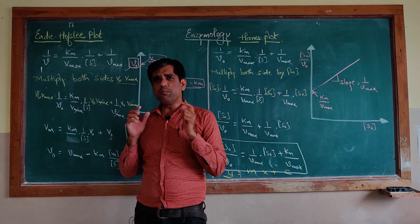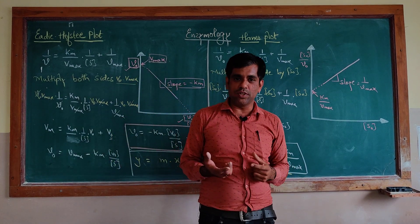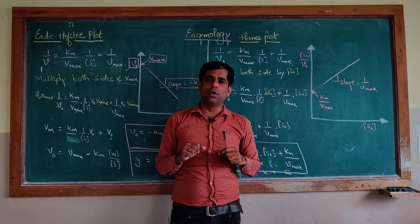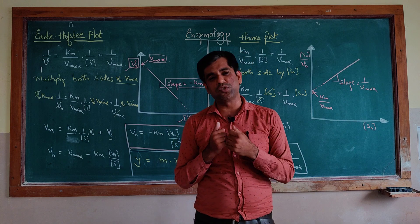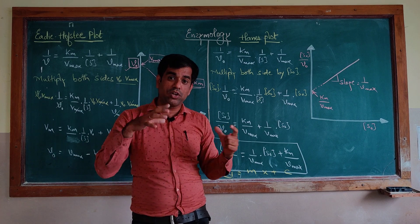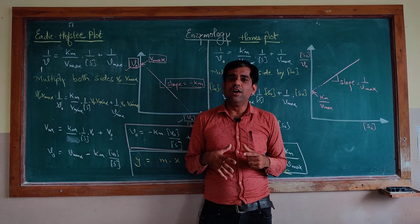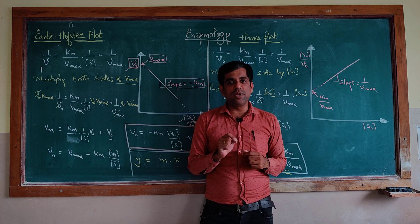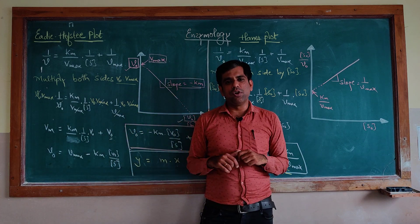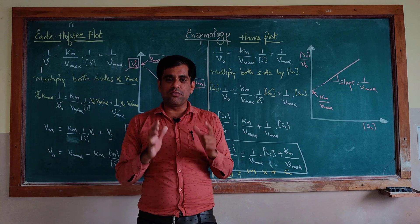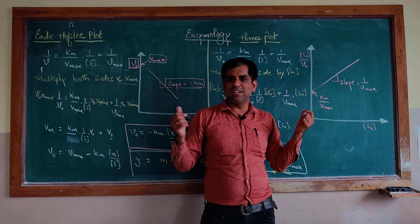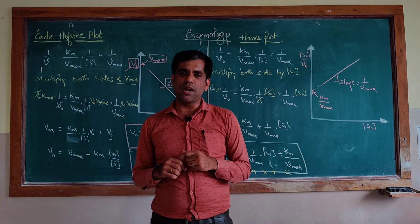It is not important which particular plot you use — whether the Hanes plot, the Eadie-Hofstee plot, or the Lineweaver-Burk plot. There are many variations, including the Eisenthal-Cornish-Bowden plot which we will discuss in coming videos. What matters is the quality of data you put into these plots to estimate Km and Vmax. Though many enzymologists still prefer the Lineweaver-Burk plot, don't get confused with these equations and graphs. Stay tuned for more in enzymology and microbiology. Thank you.